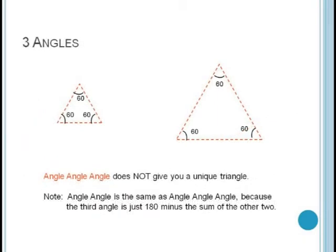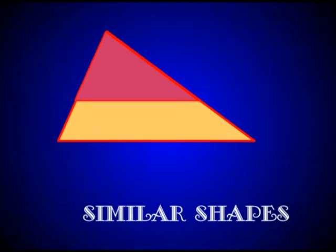Finally, if we have angle angle angle case, or AAA, it's easy to see that this does not give us a unique triangle, since every scaled version of a triangle will have the same angle measure.